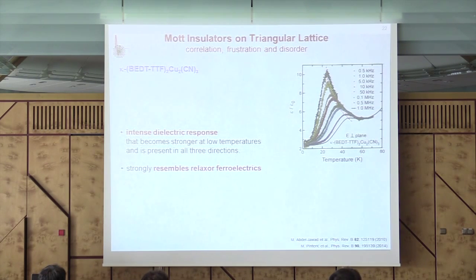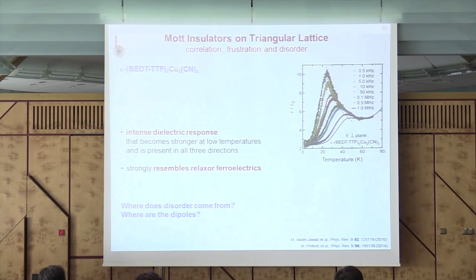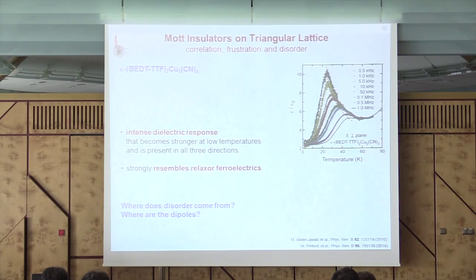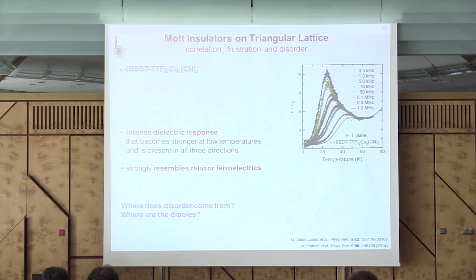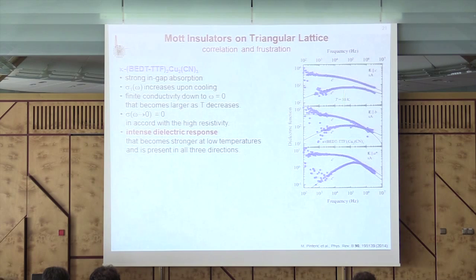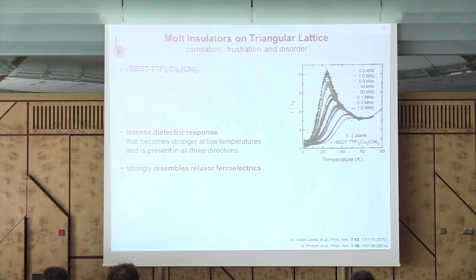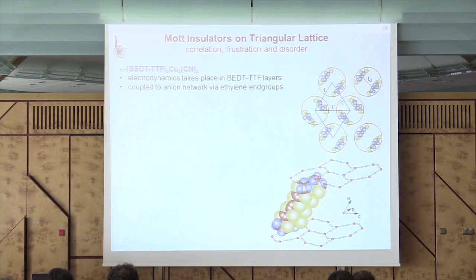The system looks like a relaxor ferroelectric, meaning there is disorder. The question is what sort of disorder — what kind of dipoles are we actually probing? The initial idea that dipoles come from charge transfer within the dimers cannot be correct, because we are talking about kilohertz and megahertz frequencies — something much slower is needed. Measurements in all three directions show similar behavior, with larger numbers in-plane. The question becomes: is what we see within the dimers, within the ET layers? We have the feeling the anions may actually be important.